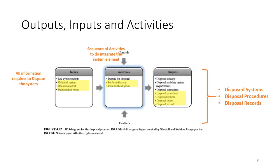The process inputs, activities, and outputs for the disposal process are as follows: you have all the information about the operation and maintenance of the desired system as inputs, you perform the disposal activities, and at the end you have a disposed system, your disposal procedures, and very importantly, records of all of the disposal activities.